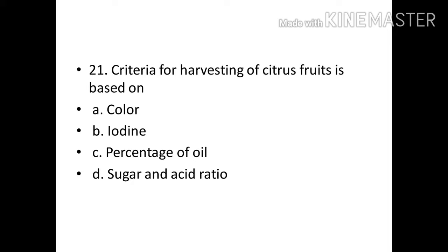Criteria for harvesting of citrus fruits is based on? Options: Color, Iodine, Percentage of oil, Sugar and Acid ratio. Correct answer: Option D, Sugar and Acid ratio.